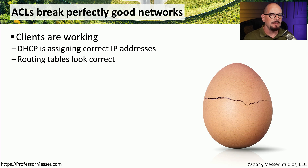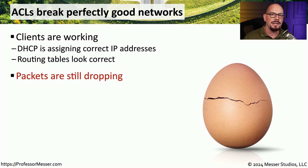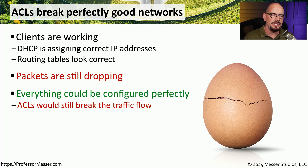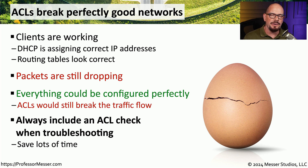Even after configuring the correct VLAN, plugging into the network, and receiving the correct IP addresses and configuration settings, you might still find that you're unable to communicate across the network. Even if your switch configuration and routing tables appear correct, packets may still be dropped. If you have access control lists somewhere along the way, they could be blocking some of the traffic you're sending. Checking switches and routers for any configured ACLs should be part of your normal troubleshooting process, especially if no traffic is able to communicate from one network to another.